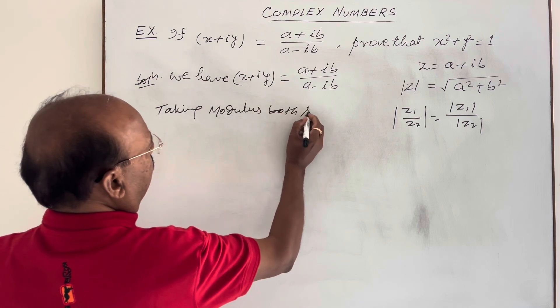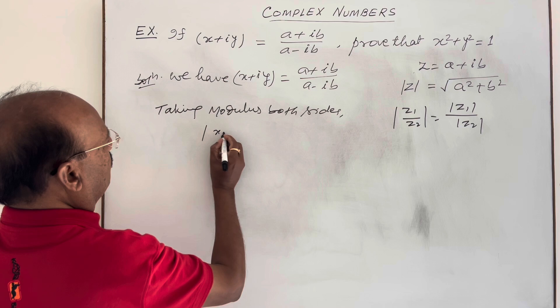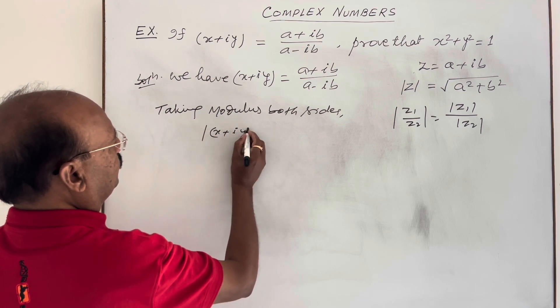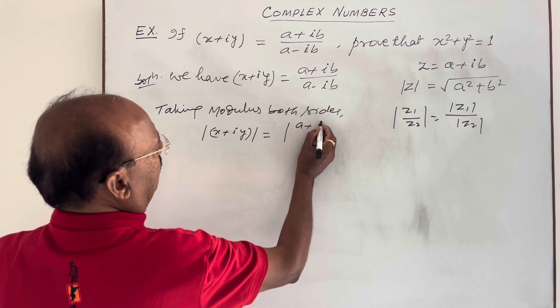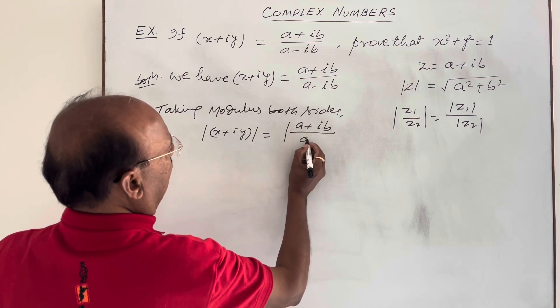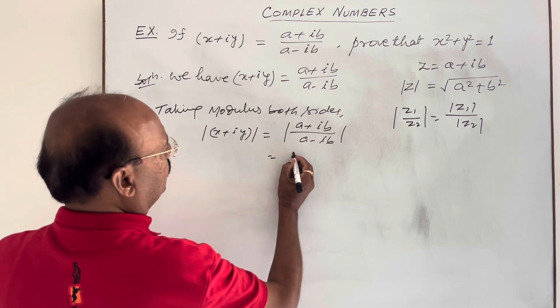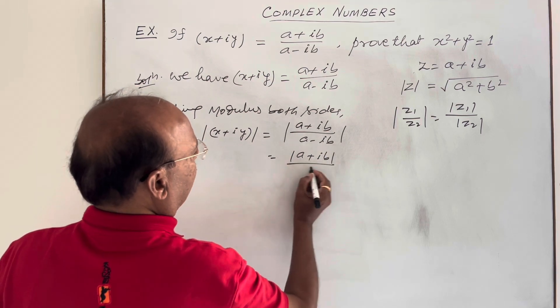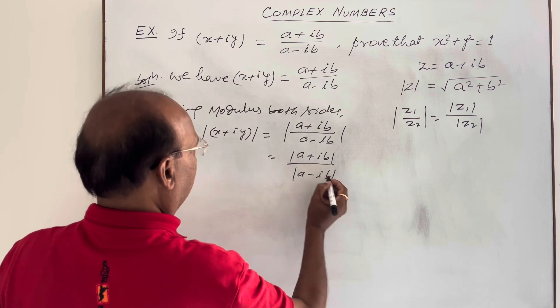we will get mod of x plus iy is equal to mod of a plus ib upon a minus ib, and this is equal to mod of a plus ib upon mod of a minus ib.